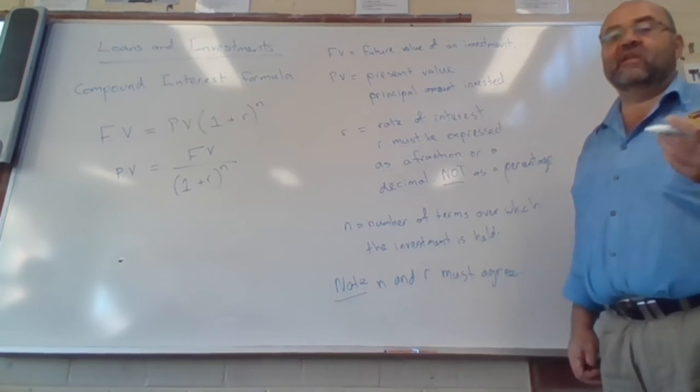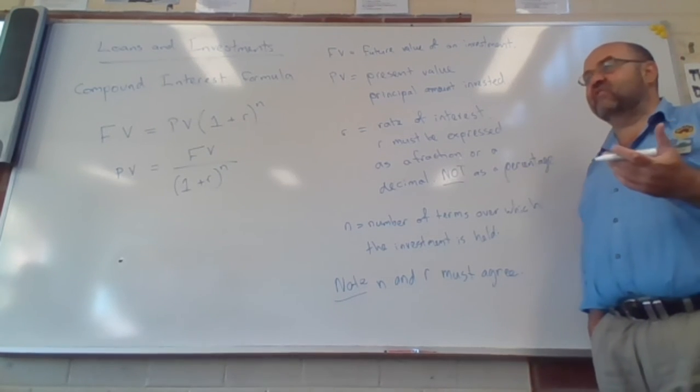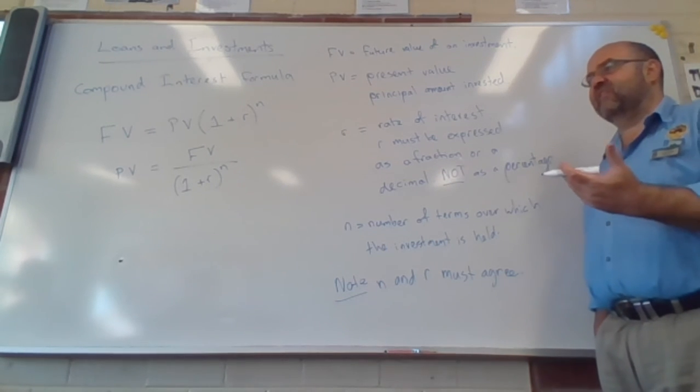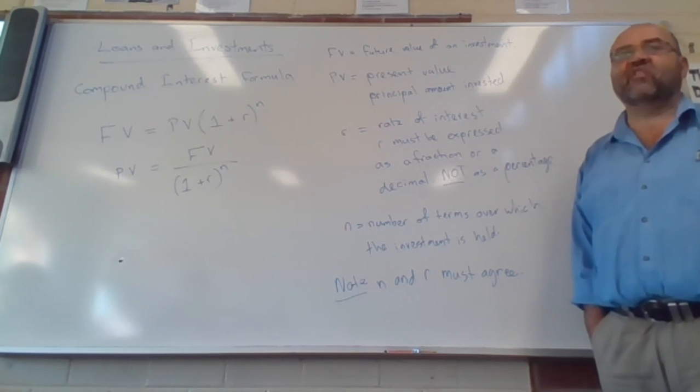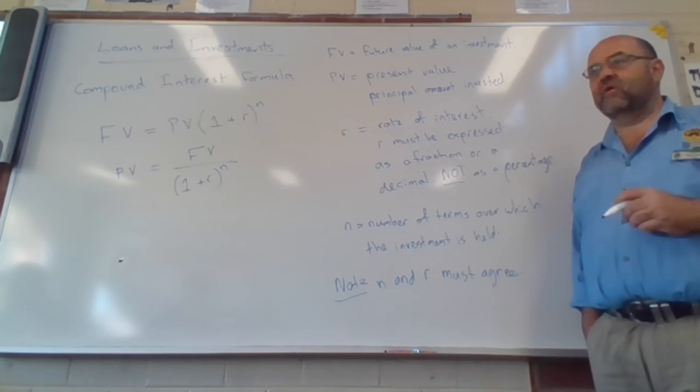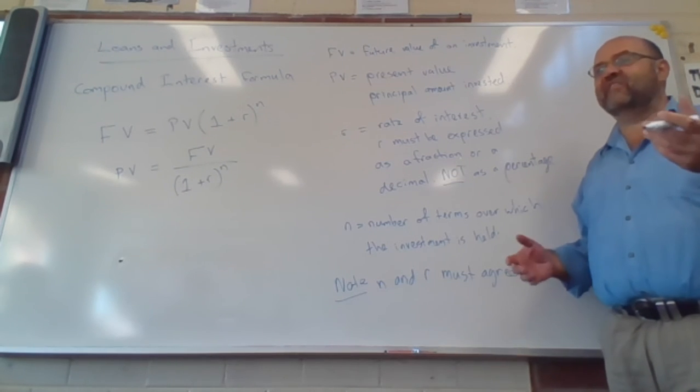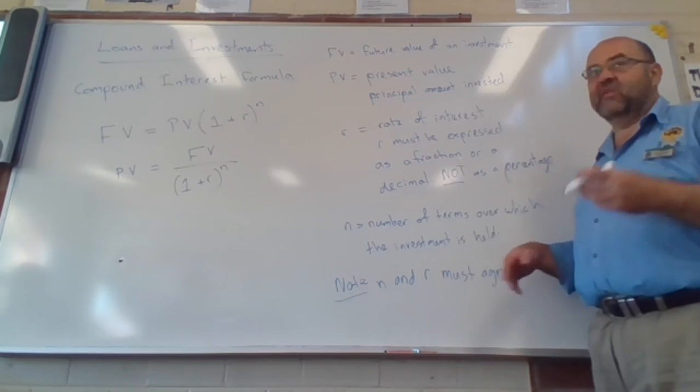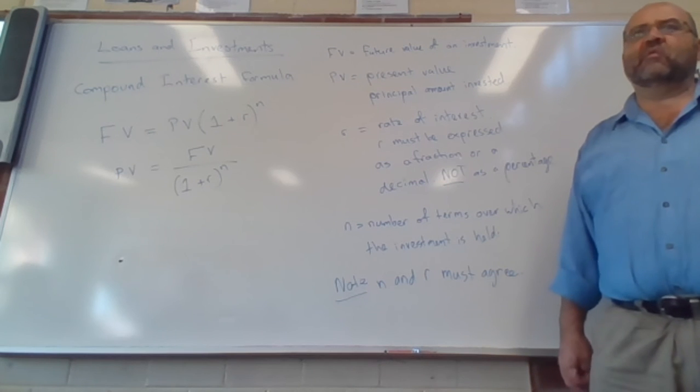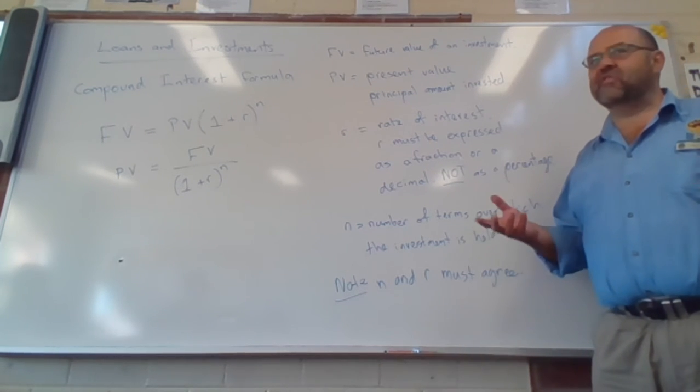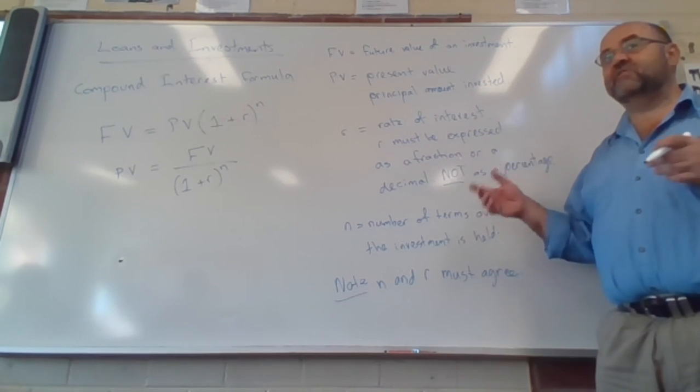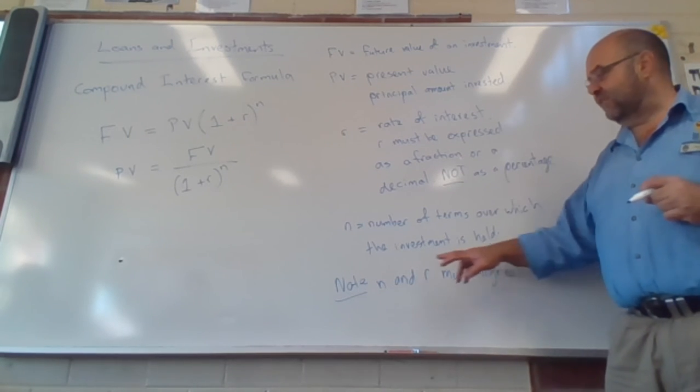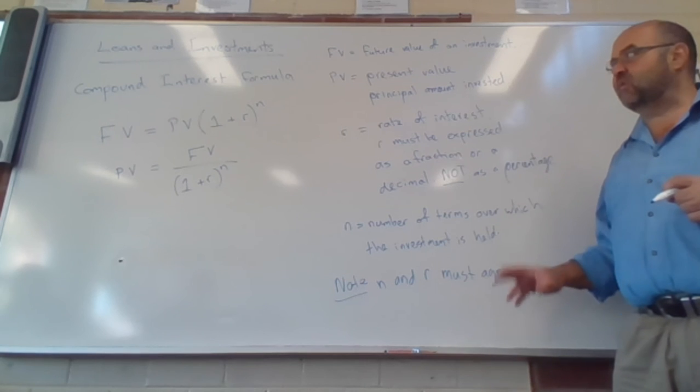So what do I mean by that? That means that if your interest is, say, again, we'll get to what these terms mean when we look at some of the examples. But if I say that my interest is compounding monthly, for example, my interest is compounding monthly. Well, that means that I need to make my interest in terms of months and my N in terms of months. So if I say I've got an investment for three years with my interest compounding monthly, I can't use three years for my terms. I need to change that three years to months. Three times 12 is 36. That's 36 months. So N and R must agree. We'll see how that works in some examples in just a moment.